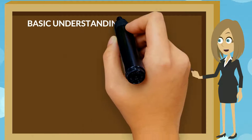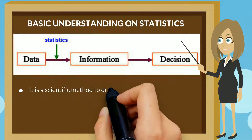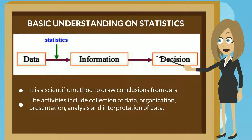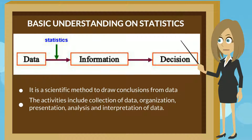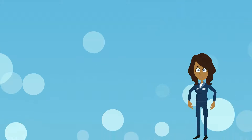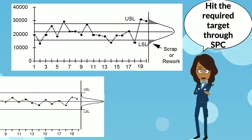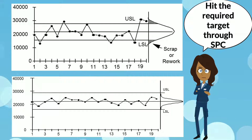SPC is a cost-effective way to monitor process performance and product quality. Decisions for the necessary preventive action are based on chart patterns. Proper SPC monitoring enables the process to be controlled at the required nominal value, and enables early detection of process abnormality.